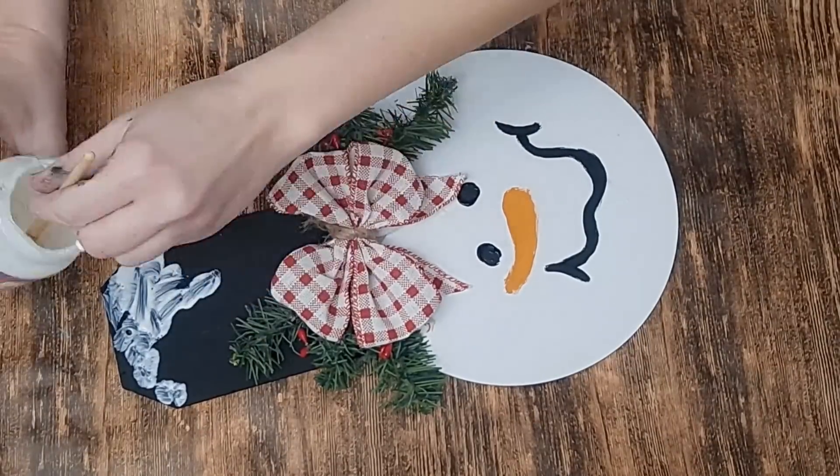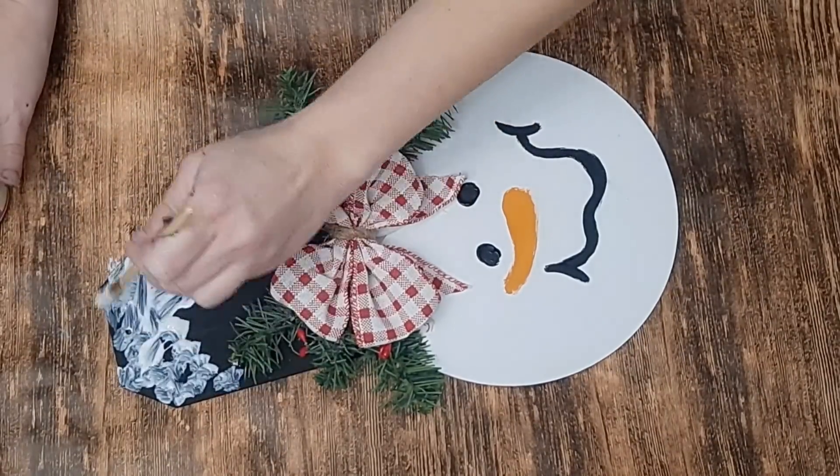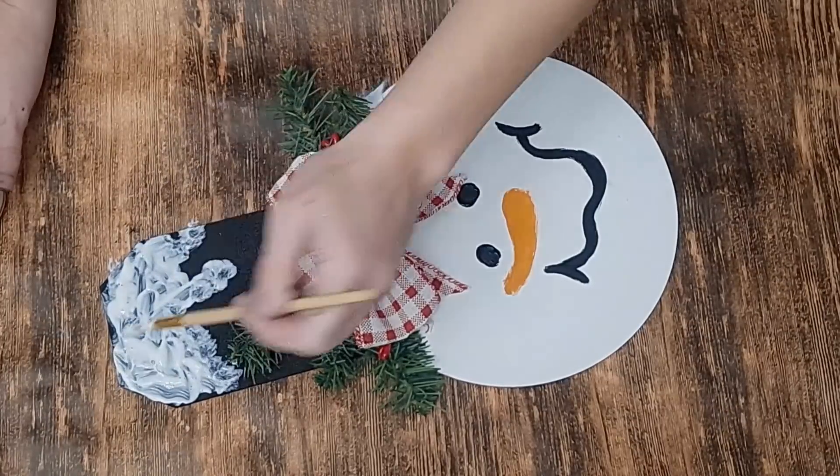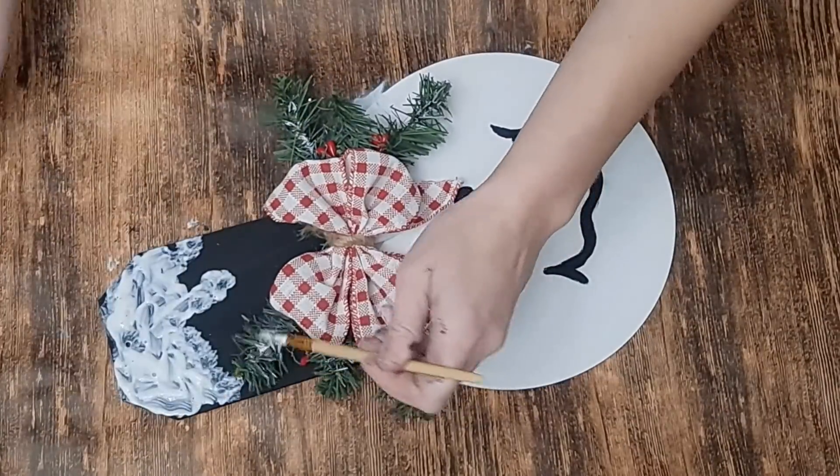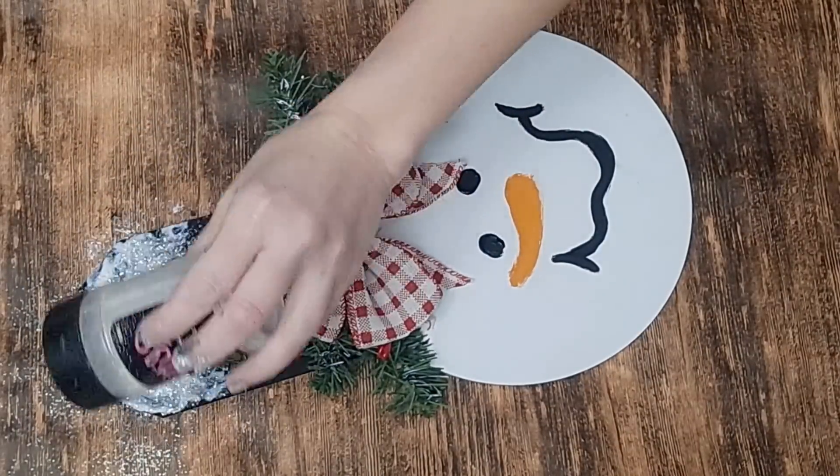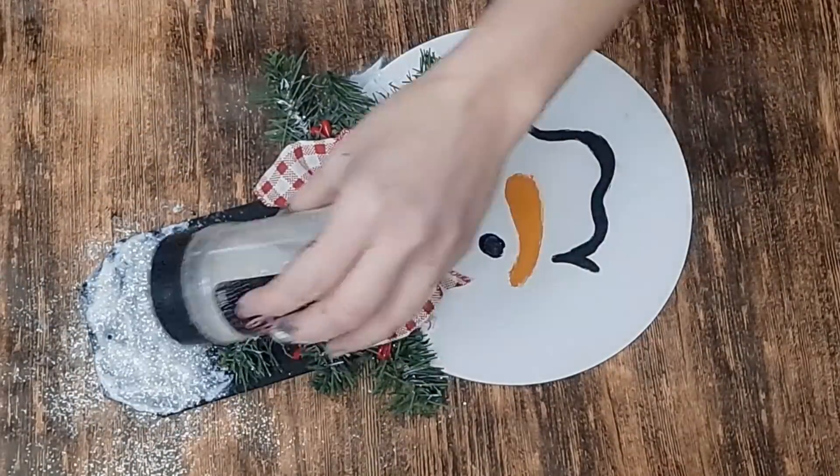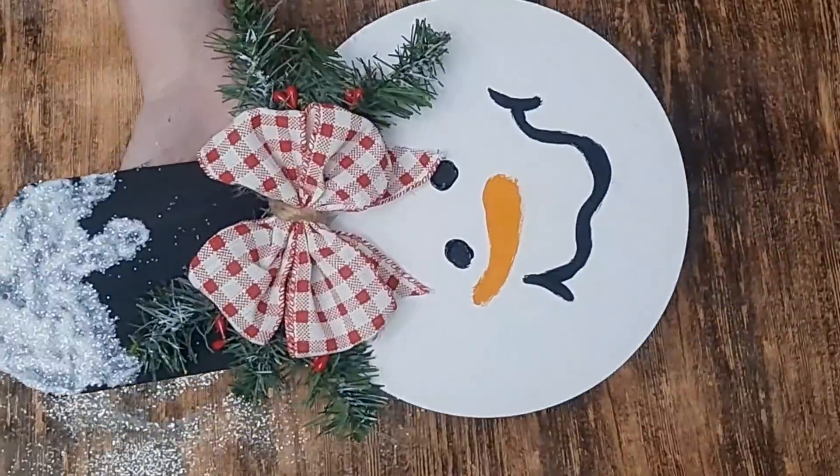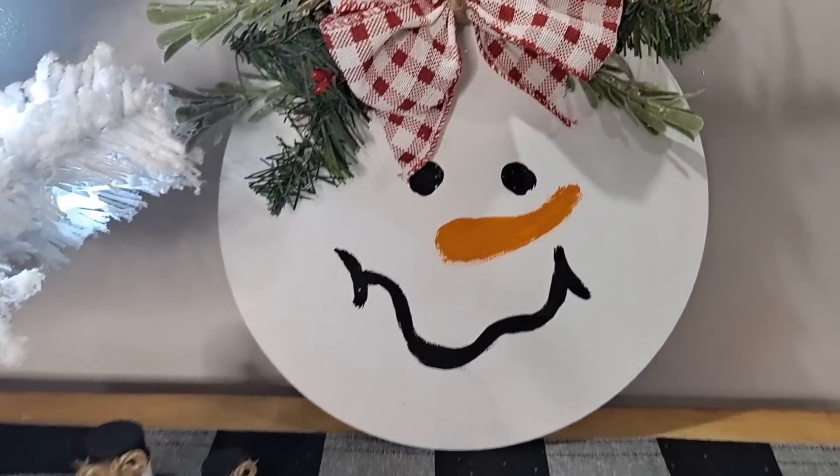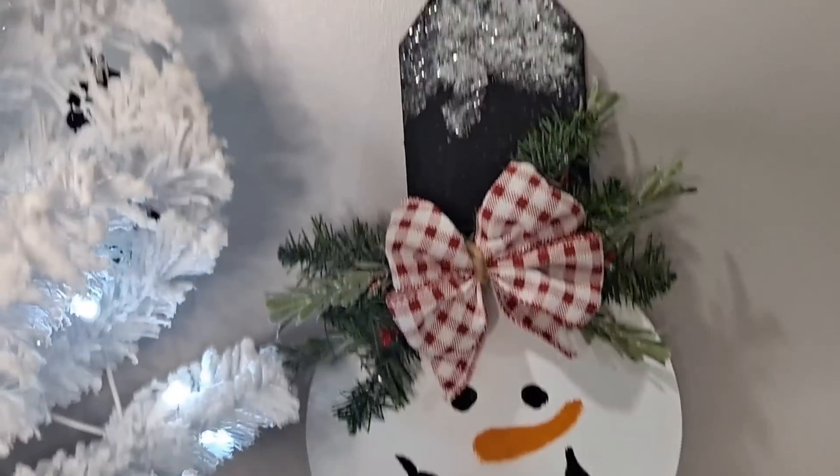I'm also going to use some Mod Podge at the top of my hat, which is why I did not worry about that little hole there. I'm just going to dab on the Mod Podge to make it look like it's kind of dripping down. I also dab some on some of that greenery, and then I'm just going to take some fine glitter that I had in my stash, sprinkle it on, and allow it to dry. And here is what I am left with, a quick and easy, adorable little snowman.